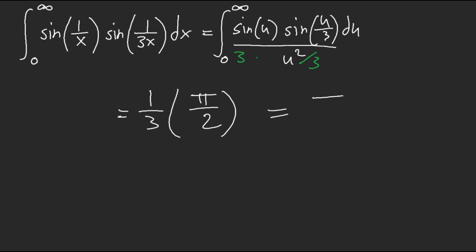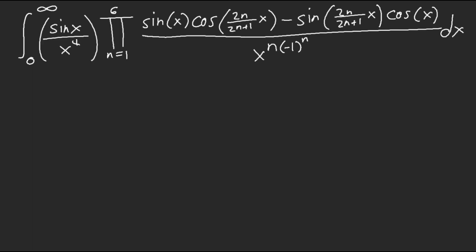So, we get 1 third pi over 2. The answer is pi over 6. We didn't have to do Feynman technique. We didn't have to do anything ugly. We just use the knowledge of Borewine integral. Oh. My. God. What. Is this? Monstrosity. Don't freak out. Don't freak out.